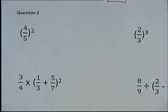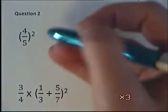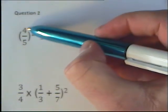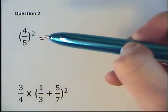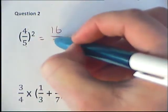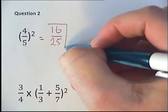The first question is looking at our rules or laws of indices with fractions. We're going to square the top number and square the bottom number. 4 squared is 16, 5 squared is 25. Can't cancel it down, so that's how it ends.